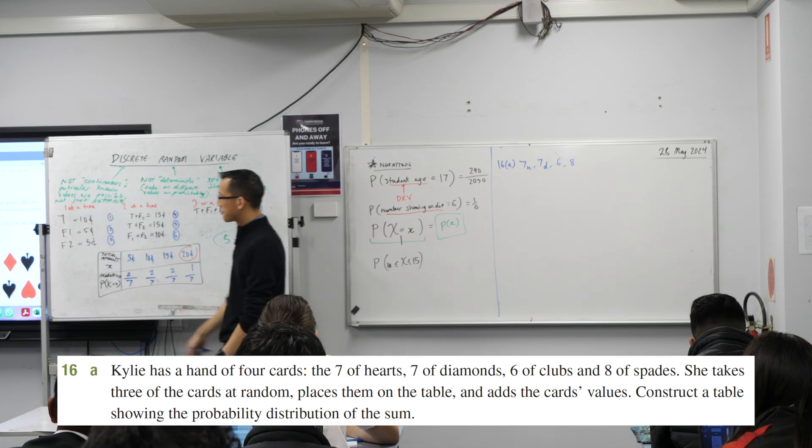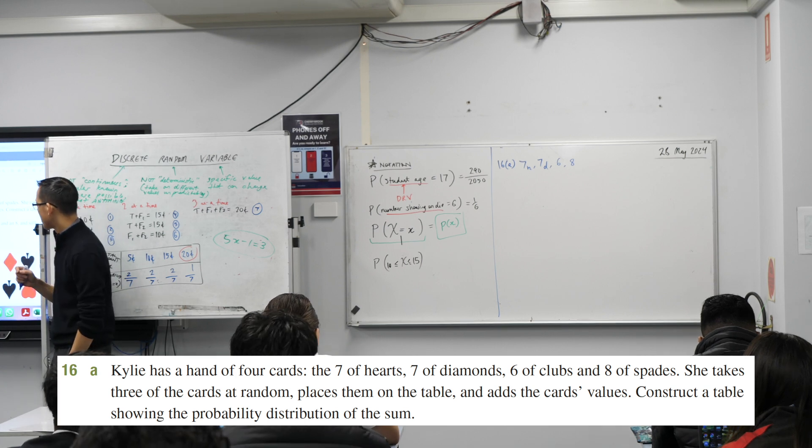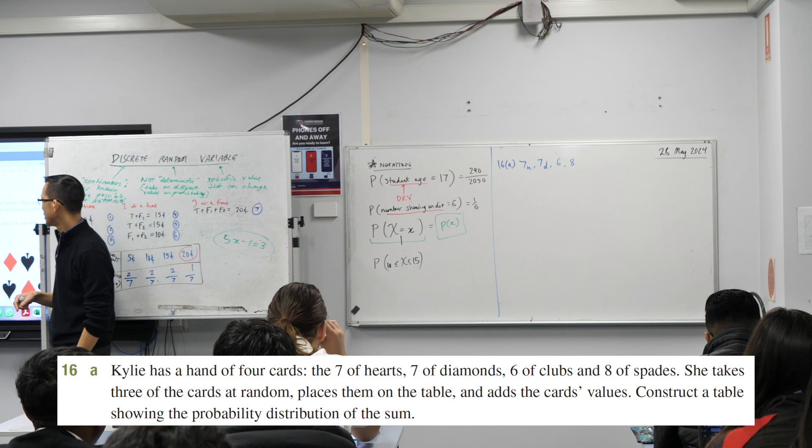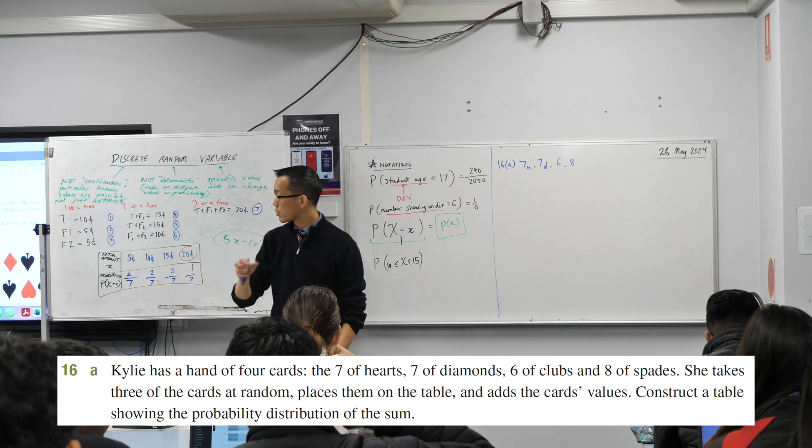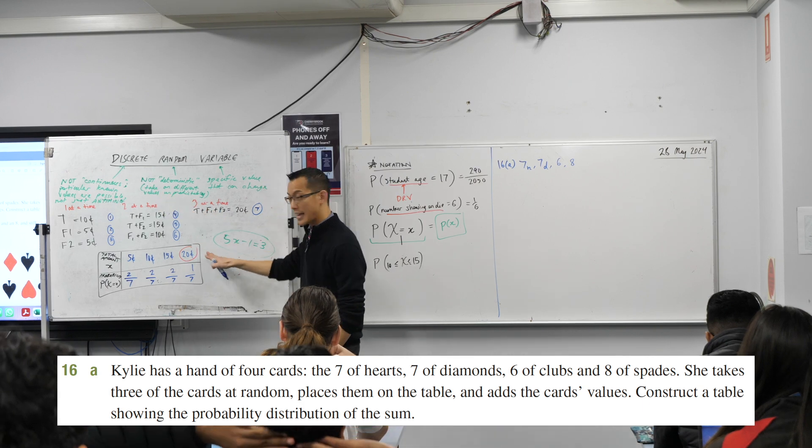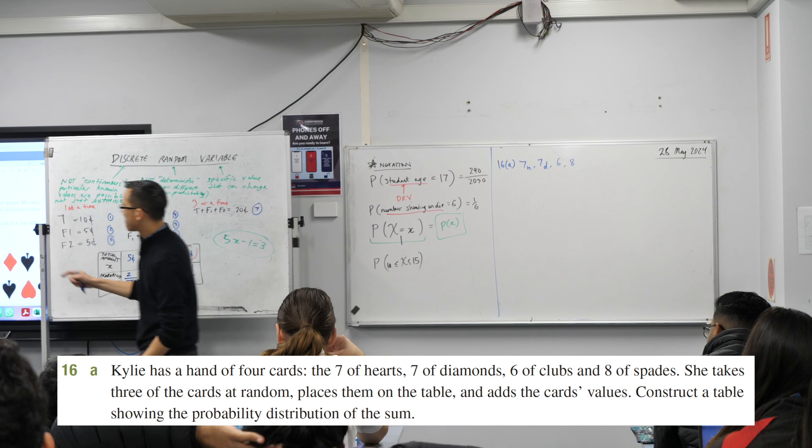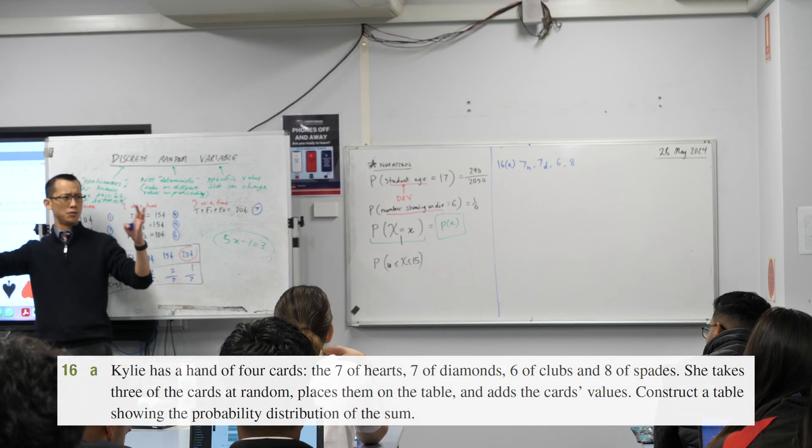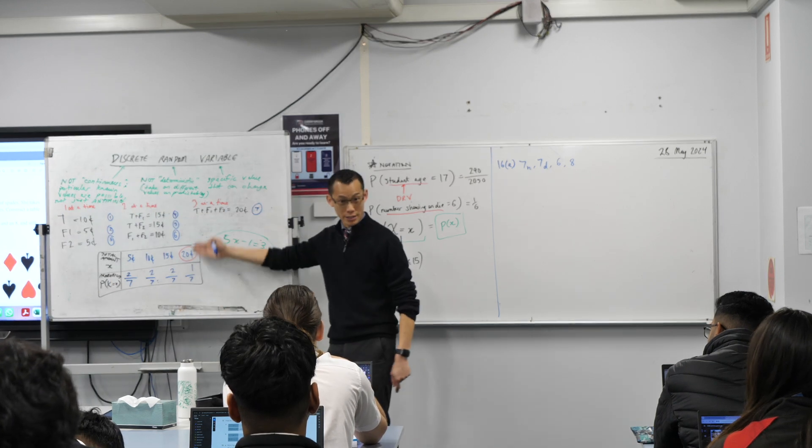So here are the possibilities. She takes three of the cards at random, places them on the table, and adds the card's values. Then this question introduces some slightly new language to us. It says construct a table. The table it's talking about is one of these. We just drew this thing, but then it says construct a table showing the probability distribution. What is that? More words describing stuff that you already know.